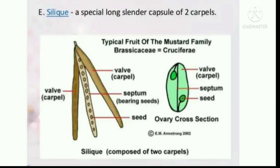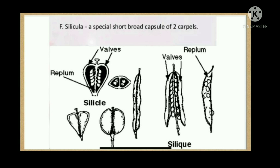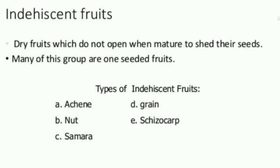Silique: a special long slender capsule of two carpels. Silicle: a special short broad capsule of two carpels. Indehiscent dry fruits do not open when mature to shed their seeds; many of this group are one-seeded fruits. Types of indehiscent fruits are: achene, nut, samara, grain, and schizocarp.